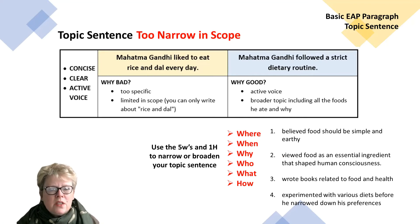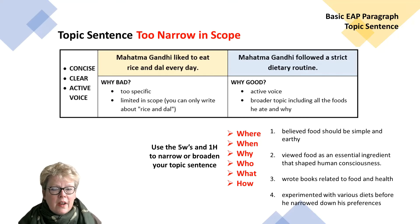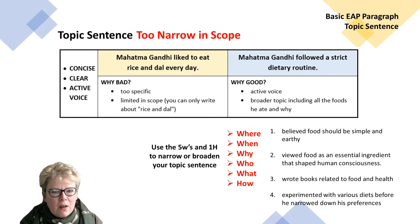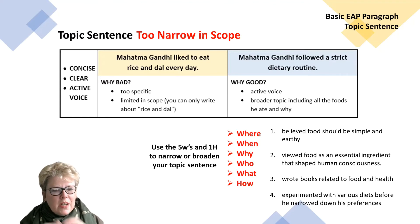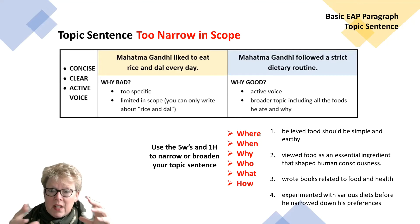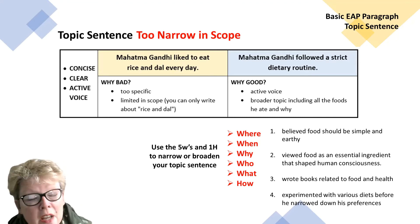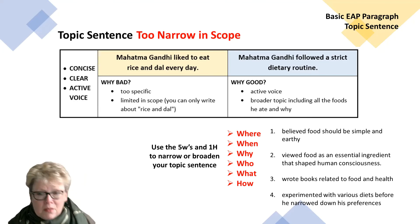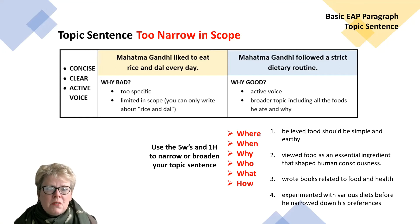Topic sentences that are too narrow in scope — again, use the five W's and one H to narrow or broaden your topic. 'Why Mahatma Gandhi liked to eat rice and dal every day' is too narrow. Your controlling idea limits what you can say in the paragraph to only rice and dal — much too specific and limited in scope. The second sentence, 'Mahatma Gandhi followed a strict dietary routine,' is broader. The rice and dal can be part of it. It's active voice and broader, including all foods he ate — what he ate, why, when. For example, he believed food should be simple, viewed food as essential to human consciousness, and wrote books about food and health.